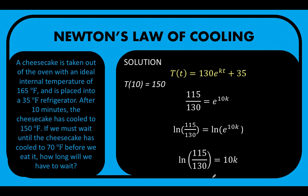And since ln of e is equal to 1, we now arrive at ln of 115 over 130 equals 10k. Then dividing both sides by 10 and applying the symmetric property of equality, we now arrive at k equals negative 0.0123.